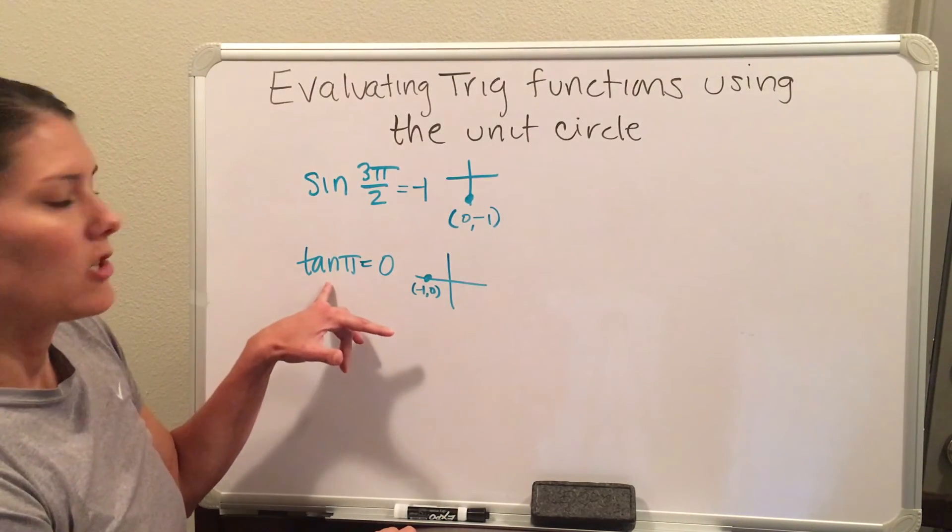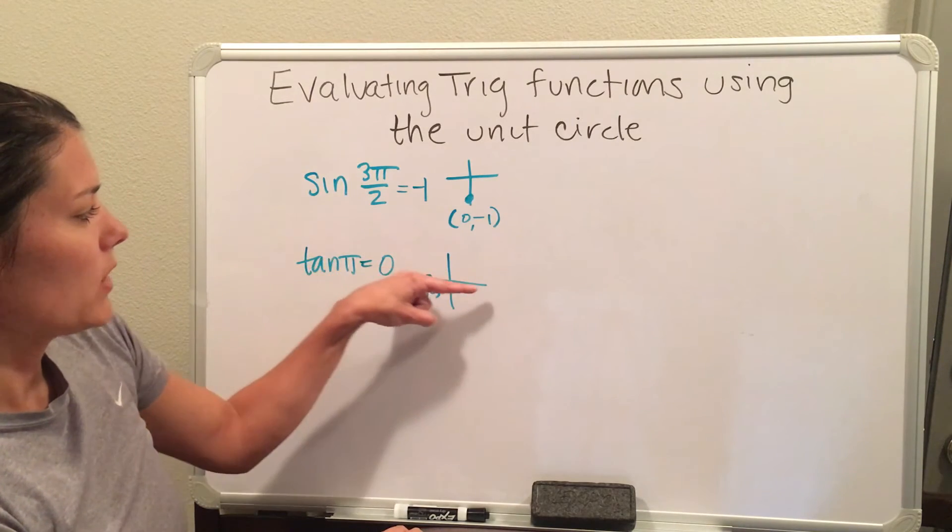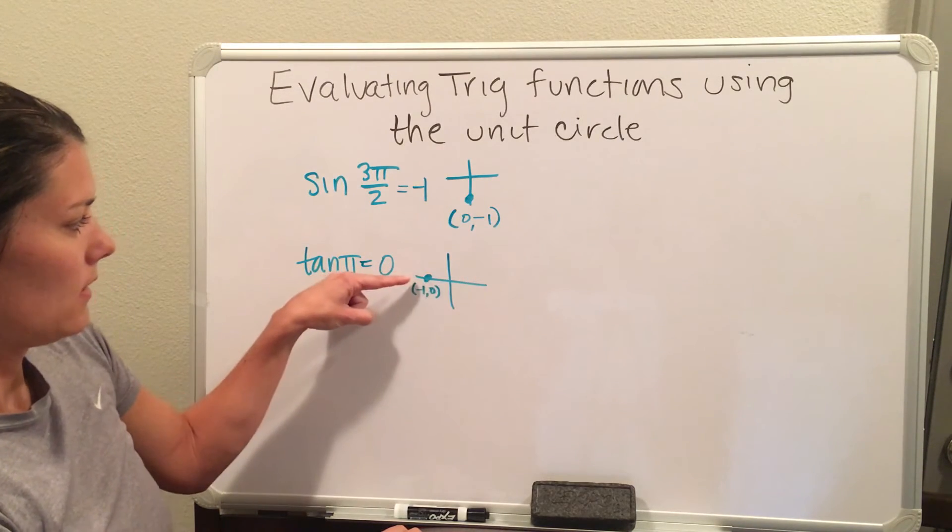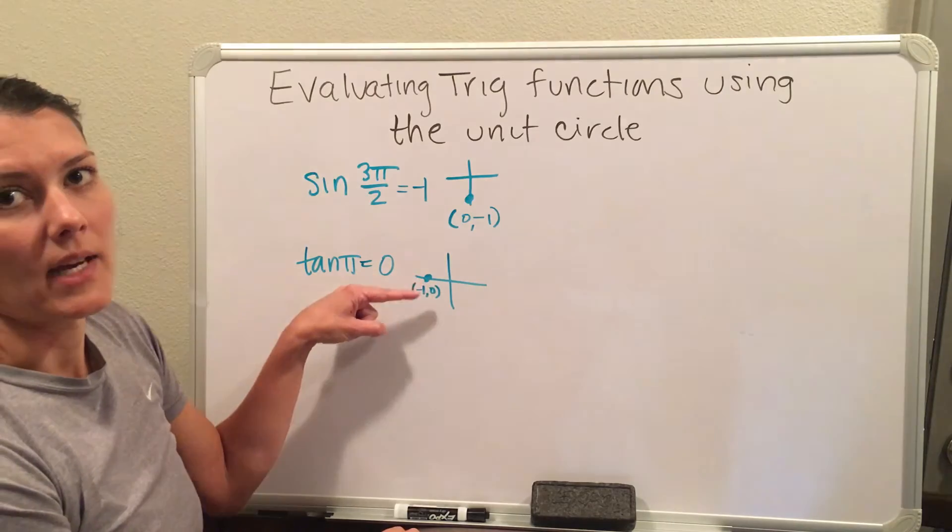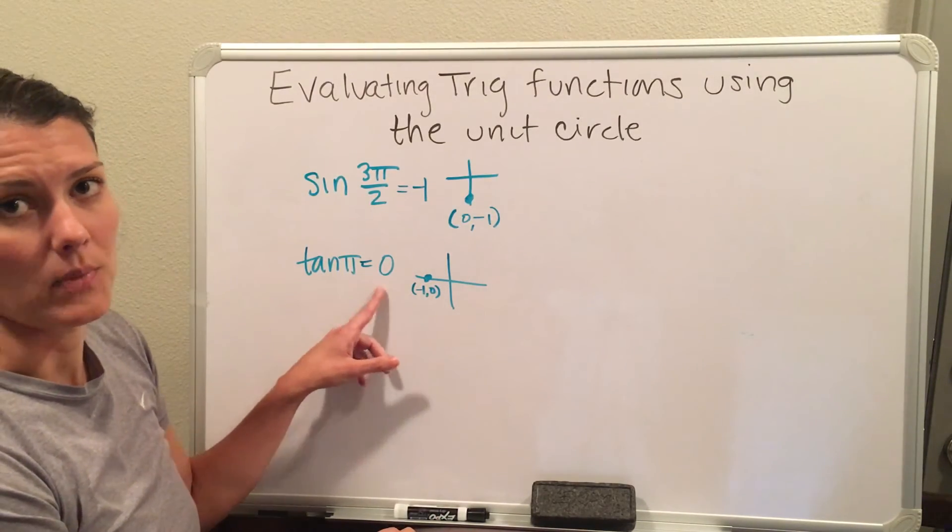Another thing to know about tangent is tangent is your slope. So if I'm looking at a horizontal line, the slope of a horizontal line is 0. So tangent of any horizontal line will be 0.